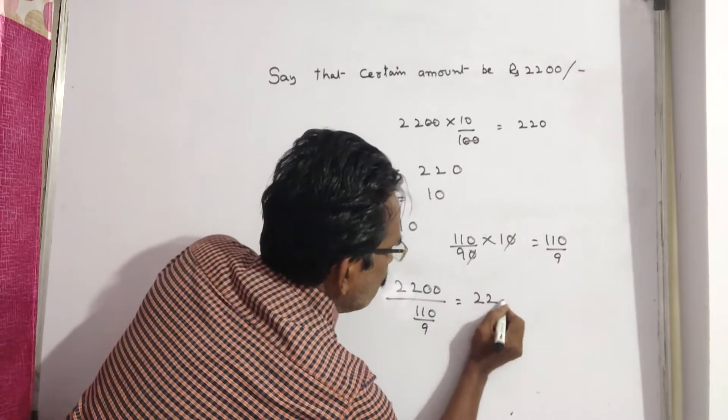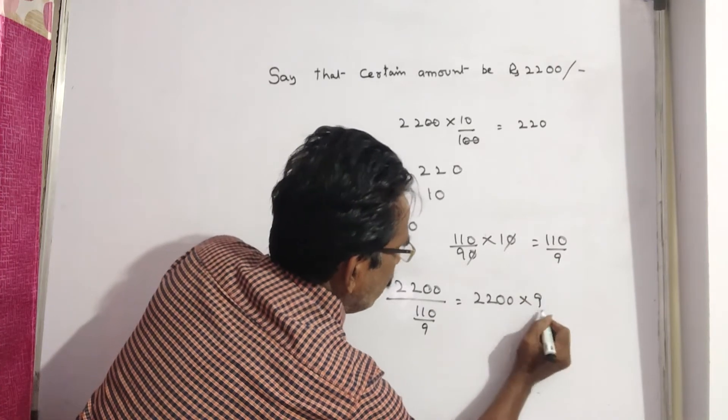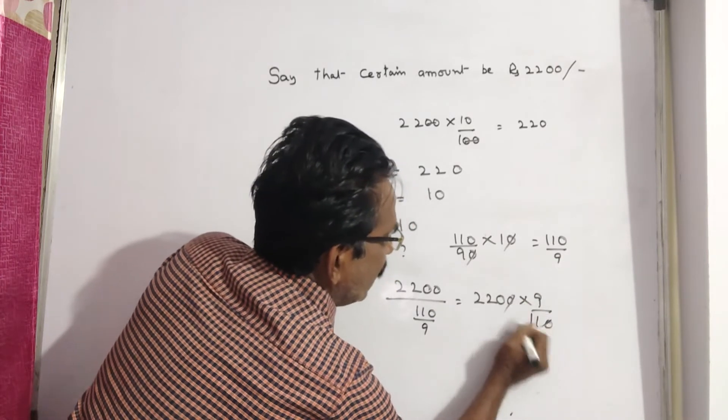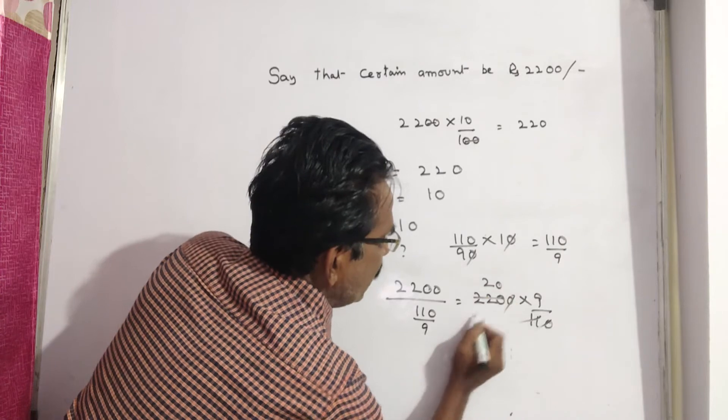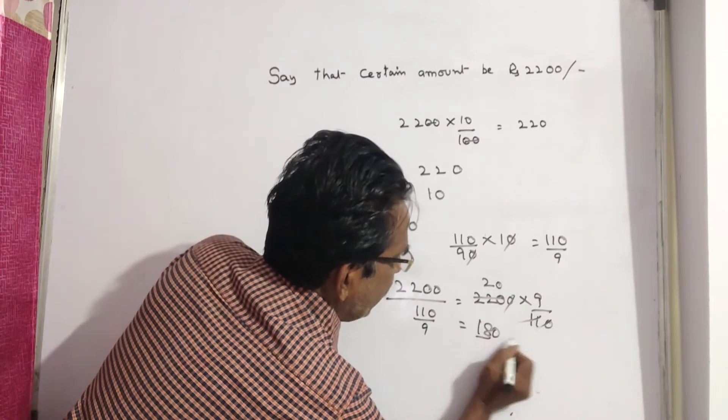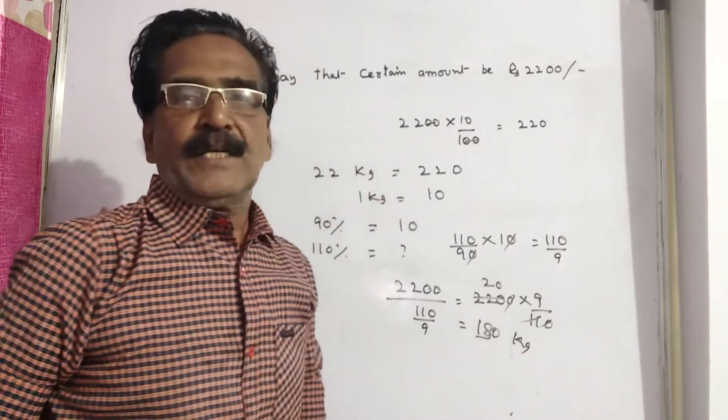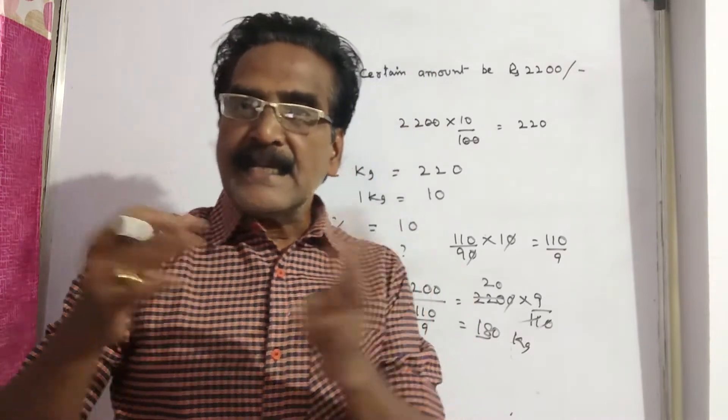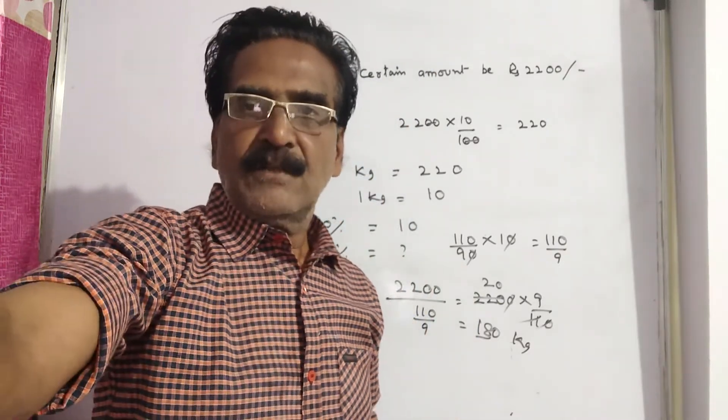That is equal to 11, 20 is 9, 20 is 180 kg. 180 kg sugar could have been bought at the increased price. Okay friends, thank you, have a nice day.